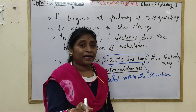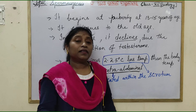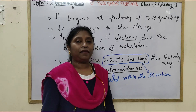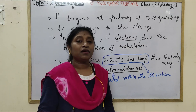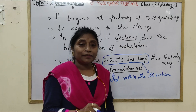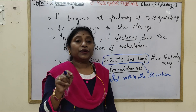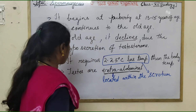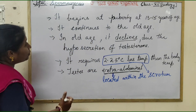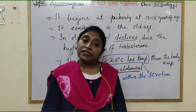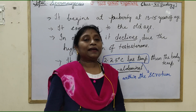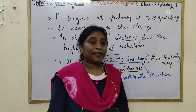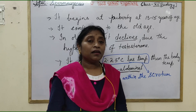Even though the testes originate within the abdominal cavity, they descend into their respective scrotal sacs under the influence of FSH and testosterone. This descent occurs during the 7th month of the fetal stage. Spermatogenesis occurs inside the testis.